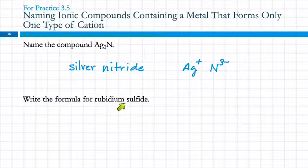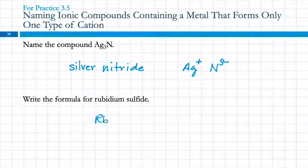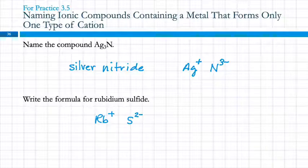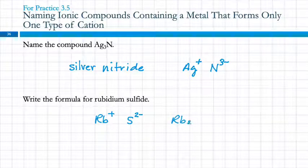Going the other way: write the formula for rubidium sulfide. Rubidium's symbol is Rb; from its position in Group 1 on the periodic table, its charge is +1. Sulfur is S with a charge of 2−. Write the ions with their charges first, then figure out how to combine them. The formula is Rb2S.